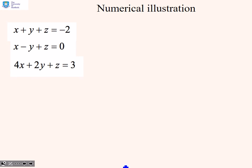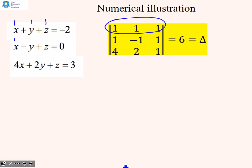Let's look at a numerical illustration. Here's three equations you might want to solve. The first thing is to define the determinant of the coefficients of the variables. I've got coefficients 1, 1, 1 on the top. 1, -1, 1 here. And 4, 2, 1 there. That gives me delta, which in this case is 6.